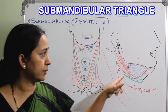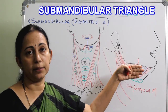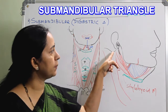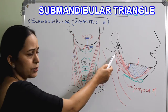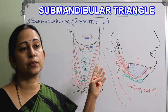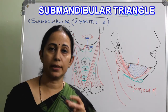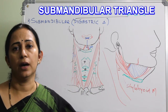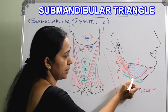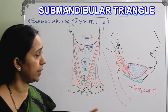The anterior belly of digastric originates from the digastric fossa on the inner surface of the mandible, comes downwards and forwards, and joins a common intermediate tendon. The posterior belly originates from the mastoid notch — also called the digastric notch — of the temporal bone, coming downwards and forwards to attach to the body and part of the greater cornu of the hyoid bone. The intermediate tendon encircles the tendon of the stylohyoid muscle.